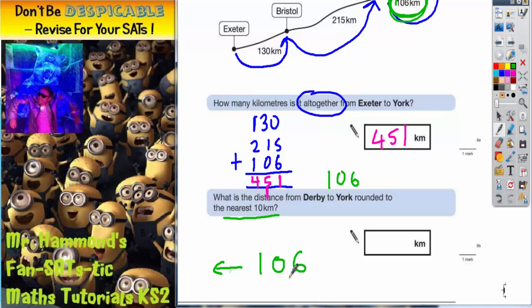Well if we go down to the 10 below that it would be 100. And if we look up to the 10 above it it would be 110.